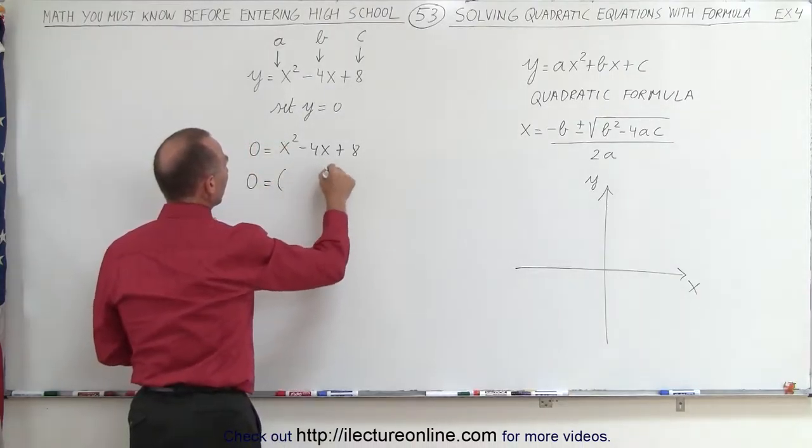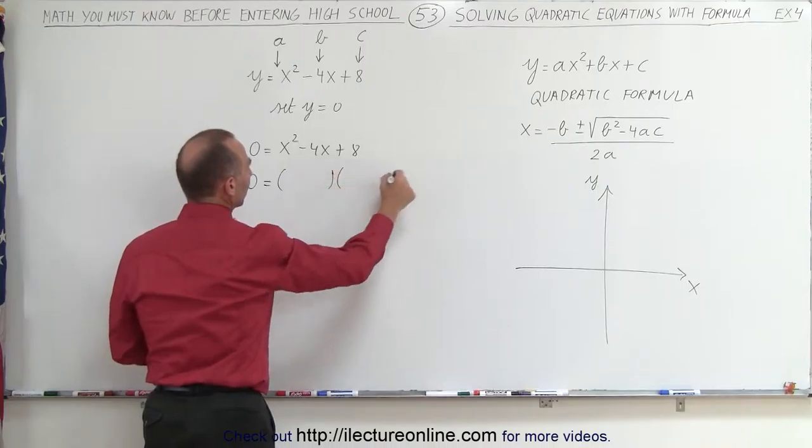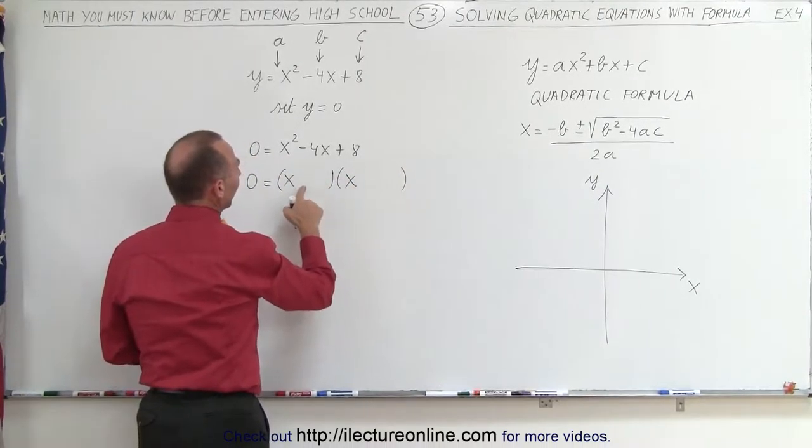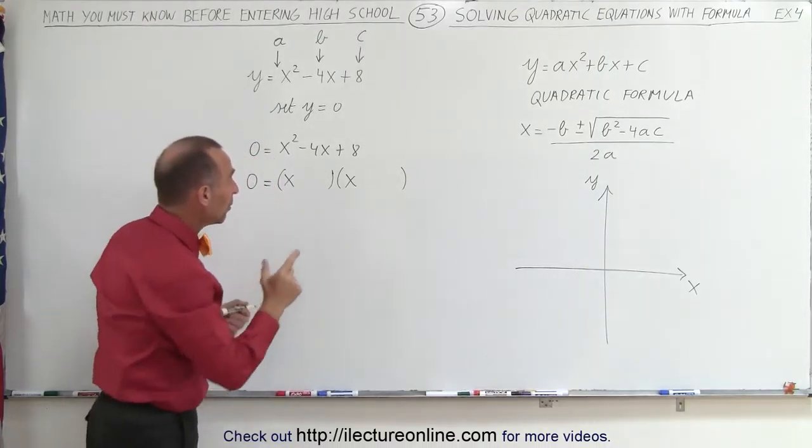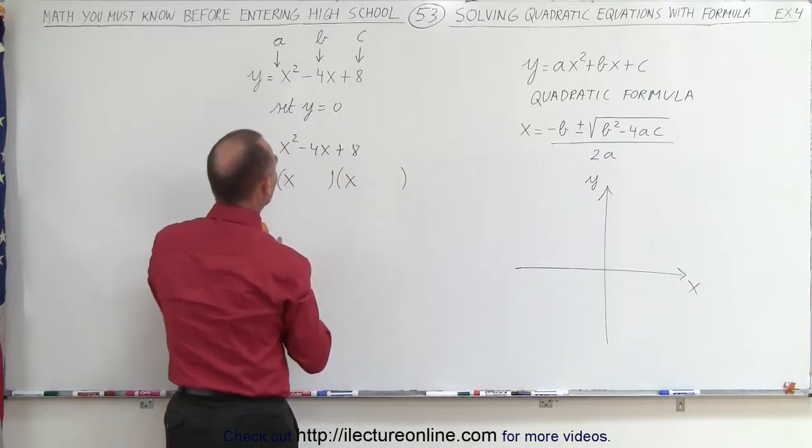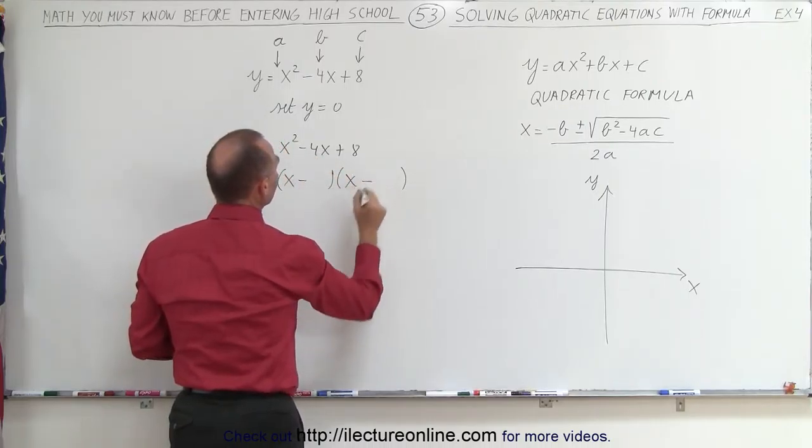So 0 is equal to, we want to write it as the product of two binomials. So we get x and x. The signs would have to both be negative because when we multiply the two numbers together, we get a positive 8, and when we add them together, we get a negative 4.